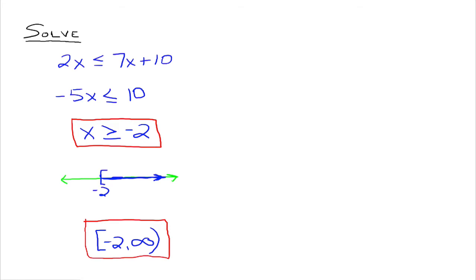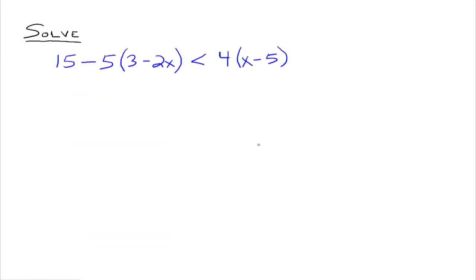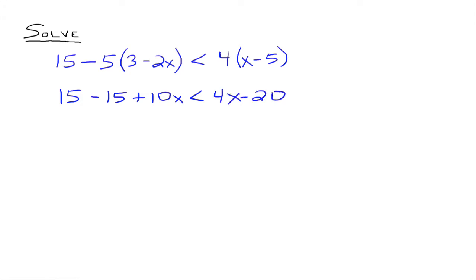Let's look at another example. We start by distributing the negative 5 through and the 4 through, so we have 15 minus 15 plus 10x is less than 4x minus 20. We can combine up the left-hand side; the 15s go away, so we have 10x is less than 4x minus 20.